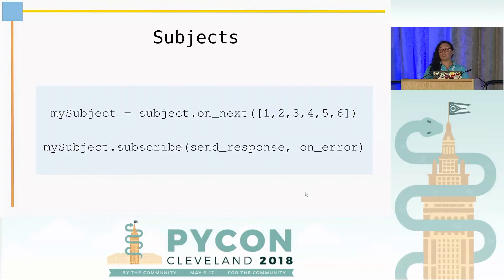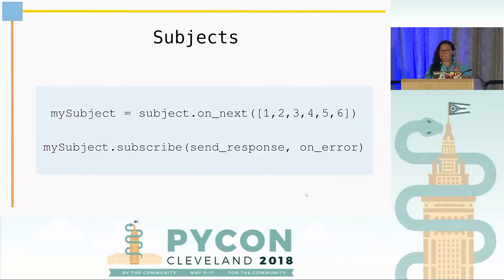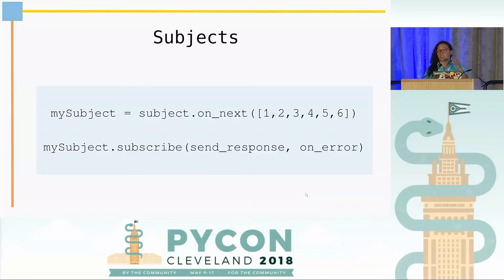There is another extension from the observable, and its name is subject. The subject acts like an observable and also like an observer. This means you can take the incoming data and also subscribe to it. The main difference is that when you subscribe to an observable, you have only one action, one emitted element. But when you subscribe to a subject, you can have multiple subscribers, and each of them will take the same action. In the observable, if we have multiple subscribers, then each will have a different action.